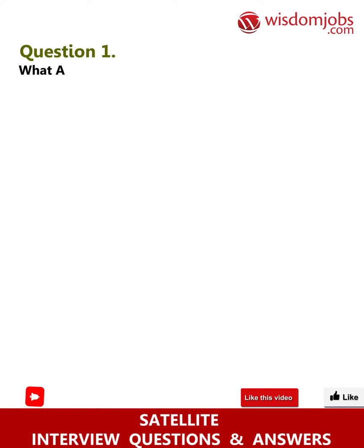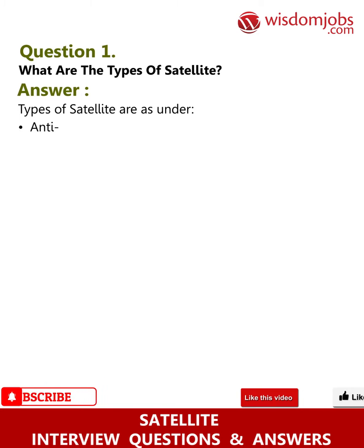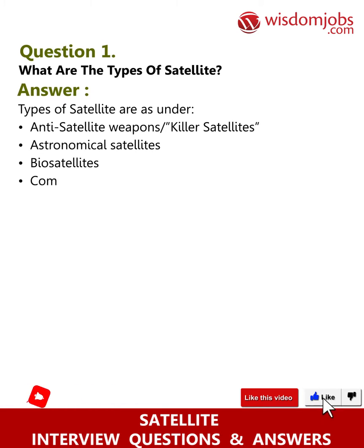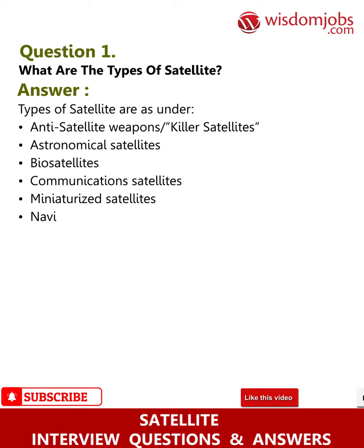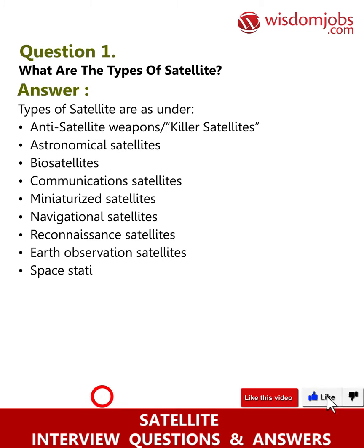Question 1: What are the types of satellite? Answer: Types of satellites include anti-satellite weapons or killer satellites, astronomical satellites, biosatellites, communications satellites, miniaturized satellites, navigational satellites, reconnaissance satellites, earth observation satellites, and space stations.